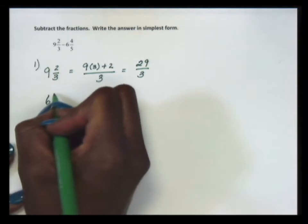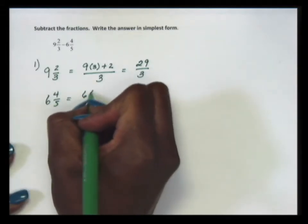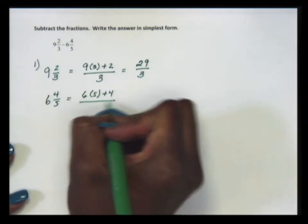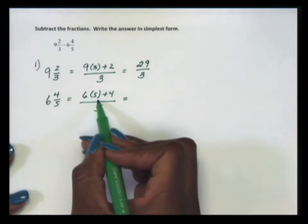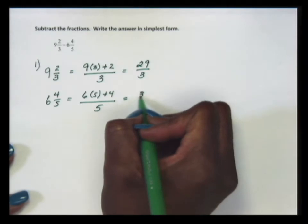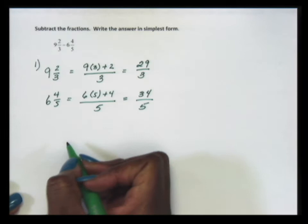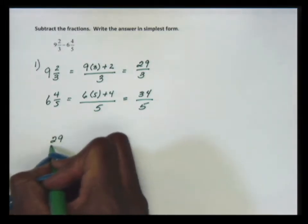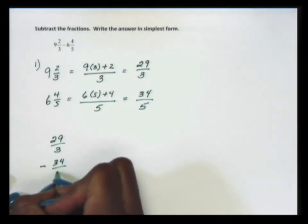For 6 and 4 fifths, we multiply 6 times 5 and add 4, keeping the original denominator of 5. 6 times 5 is 30, and 30 plus 4 is 34 over the denominator of 5. So now our new problem is 29 thirds minus 34 fifths.